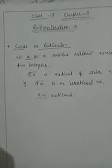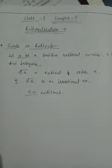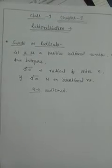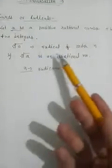Let's understand what is a surd and radical. If a and b are positive rational numbers — a rational number is a number which can be written in the form p by q, where p and q are integers and q is not zero — and n is a positive integer, then the nth root of a is called the radical of order n.